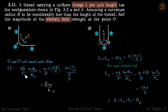We will be left with E2, that is due to this quarter circle. The formula for the electric field due to an arc at the center is kq/r² · sin(φ/2) / (φ/2). Here the value of φ will be 90 degrees, and q will be lambda times the arc length, which is 2πr/4. Just put these values in and you will get the answer.